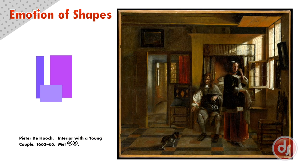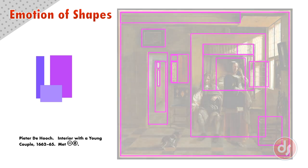Pieter de Hooch painted the interior of this Dutch house with a young couple in it, and his main design motif was squares and rectangles. Most are seen in a flat position to the viewer which makes them feel stable. The only real diagonals come from other squares or rectangles in perspective. The use of all of these squares and rectangles makes the design feel incredibly stable and static.